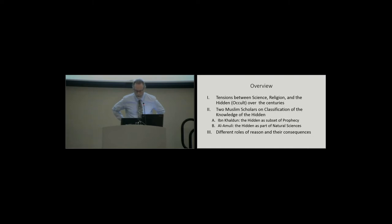So let me begin by just talking about what I'm going to try to cover. I'm going to start with some observations about the concepts of science, religion, and the hidden, or the occult. Then I'm going to look at two different classifications of the hidden that are found by eminent Muslim scholars. One of them, Ibn Khaldun, the great Arab scholar of North Africa in the 14th century. And the other one, a Persian named Al-Amuli from the same time, who came to very different conclusions in their attempt to classify the hidden sciences.